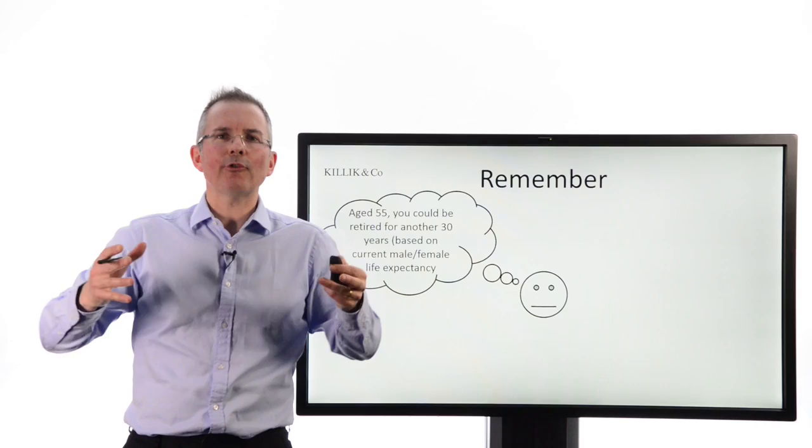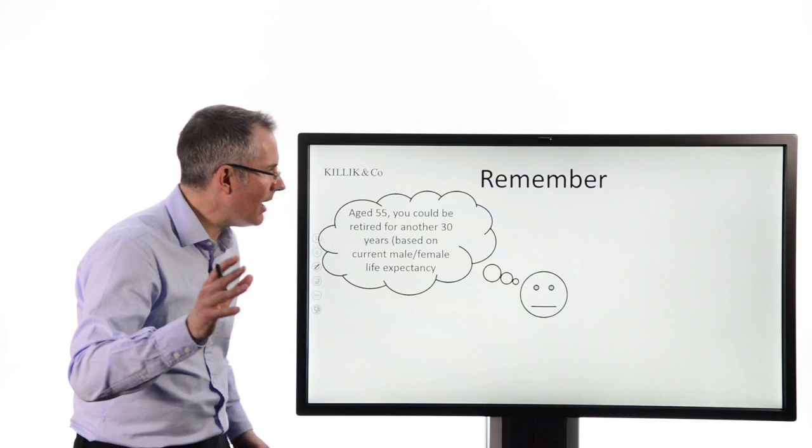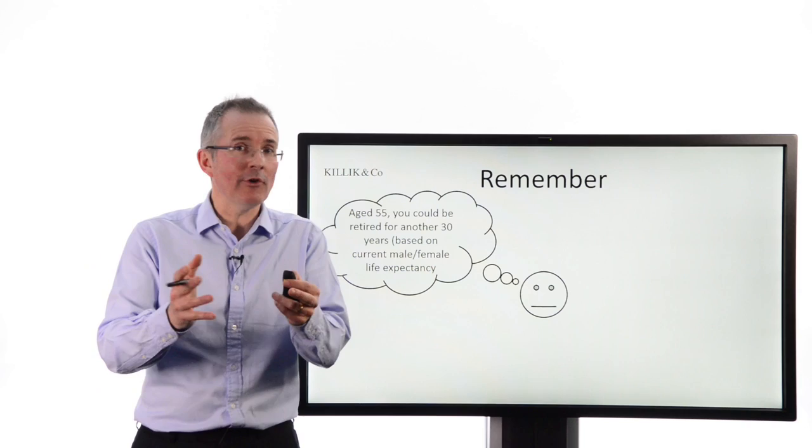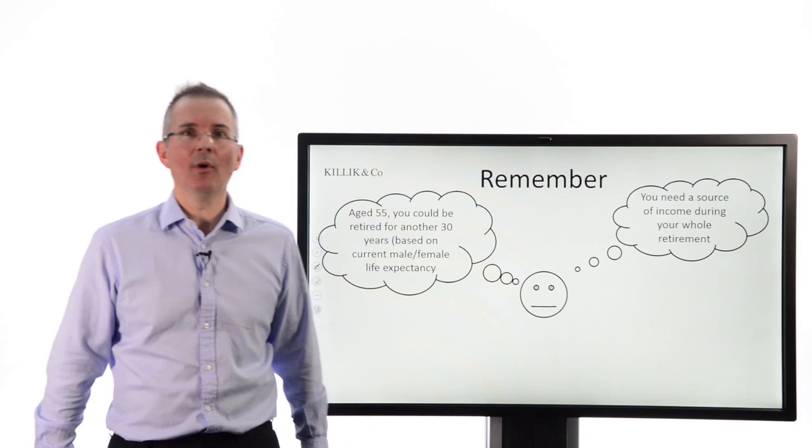Now, key things to remember about this. You know, it's very tempting. Take all your money out now. It sounds too good to be true. Throw a party. Buy that Ferrari, whatever it happens to be. You've seen the headlines. But remember, at the end of the day, age 55, you need to be planning for a retirement period that could easily be 30 years long. You know, girls born today are estimated to be living on average to 100. So don't be too hasty.